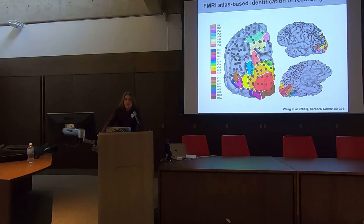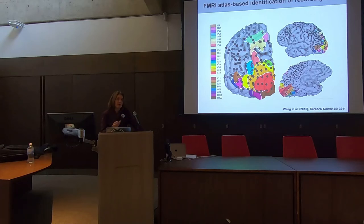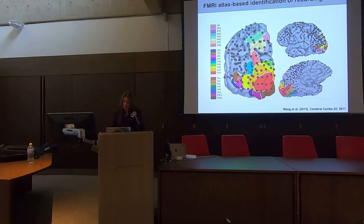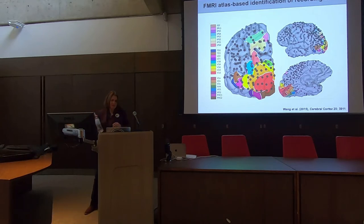Since my interest is primarily in the extended human visual system, we have created our own atlas based on fMRI topographic mapping in healthy adults, and we can probabilistically project intracranial electrodes onto this atlas. These are all the known areas involved in visual processing in the human brain, and that approach gives us a better idea of where some of these electrodes reside. This atlas, by the way, is freely available and can be plugged into major fMRI analytical tools.